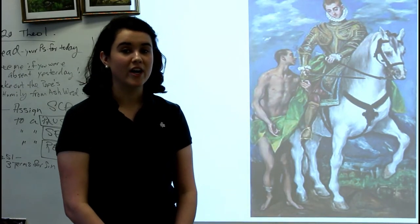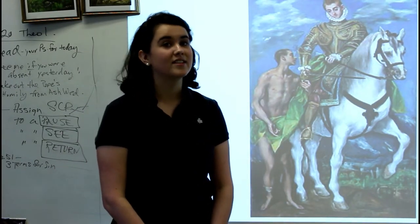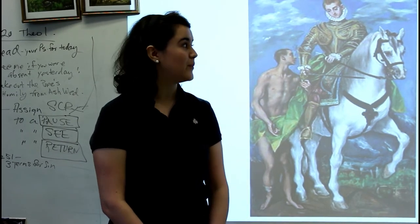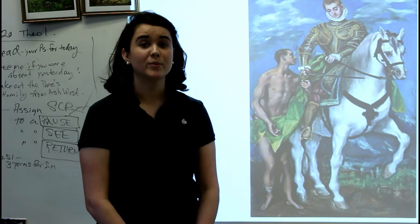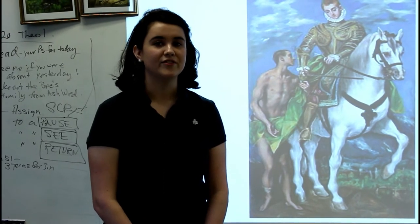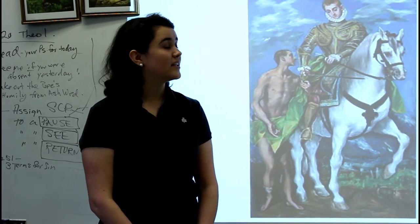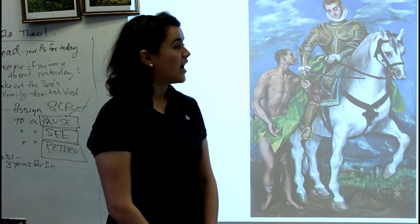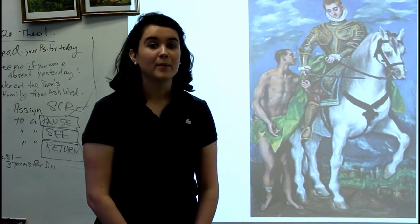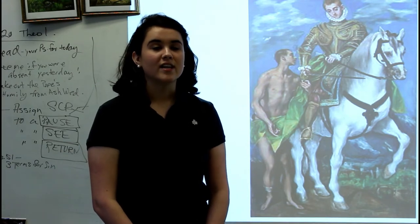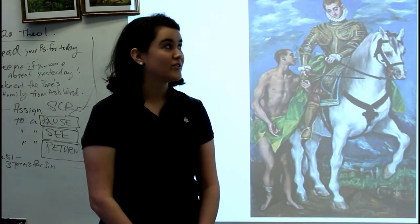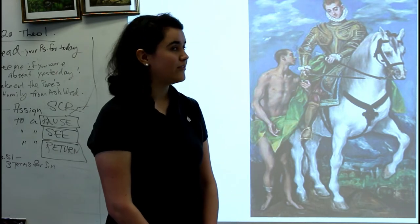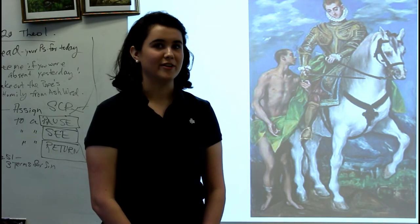El Greco was a 16th century Greek artist who, after moving to the city of Toledo in Spain, created some of his most well-known works, one of them being St. Martin and the Beggar, painted between 1597 and 1599. He is commonly accredited with helping to define the Spanish Renaissance with his art. After being commissioned for the Chapel of San Jose, El Greco decided to depict the famous story of the 4th century Roman soldier who divided his cloak and gave half of it to a shivering beggar in the middle of winter.